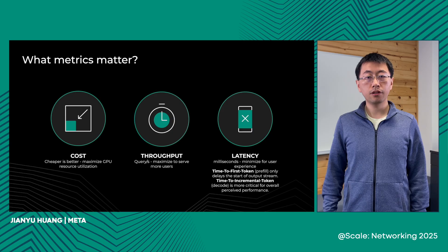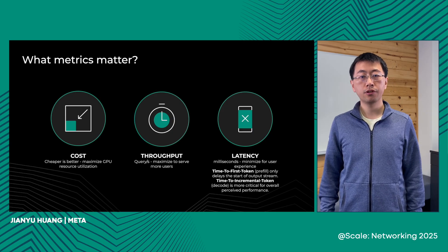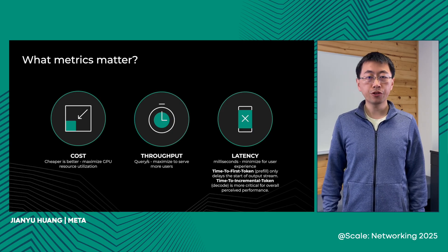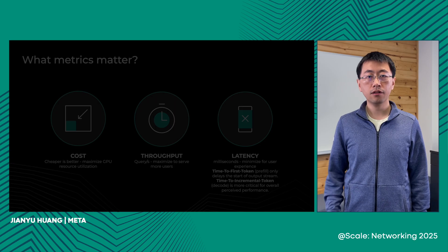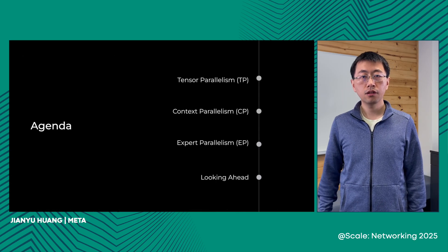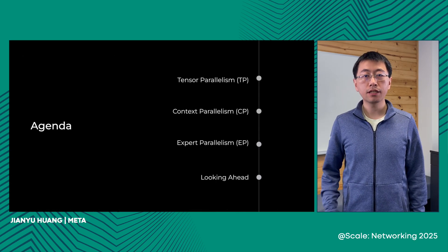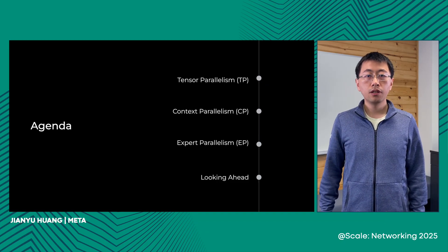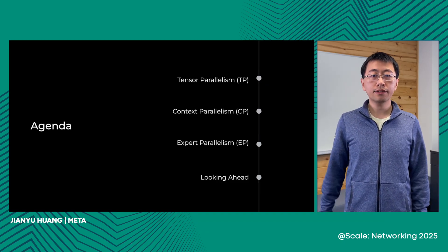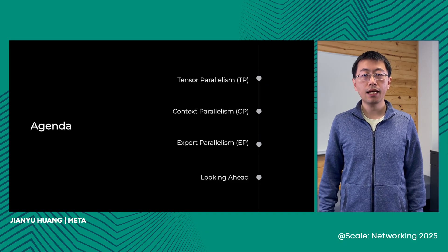Now you've heard about the metrics. Let's get to three types of inference parallelism for scale. Chen will talk about tensor parallelism, I will cover context parallelism, and Xiaodong will cover expert parallelism. So now I will hand over to Chen to discuss tensor parallelism.